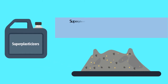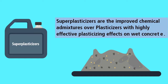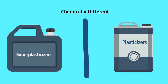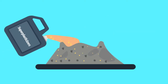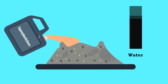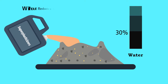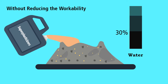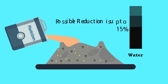Superplasticizers are the improved chemical admixtures over plasticizers with highly effective plasticizing effects on wet concrete. Superplasticizers are chemically different from normal plasticizers. Use of superplasticizers allows the reduction of water in the concrete up to the extent of 30% without reducing the workability, in contrast to the possible reduction up to 15% in case of plasticizers.